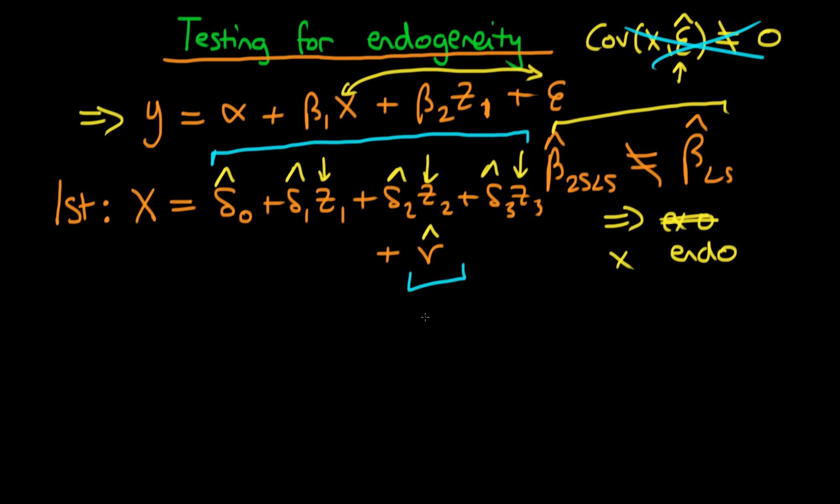Well, this term here, which I'm drawing lines around here, can be thought about as the variance in x, which is due to the exogenous variables z1 through z3, whereas v hat or v, you can think about as being due to the endogenous part of x, if it exists, that is.